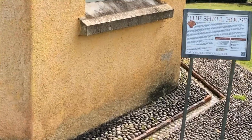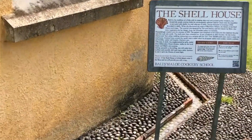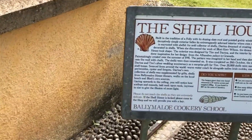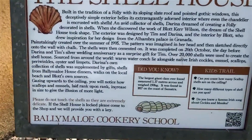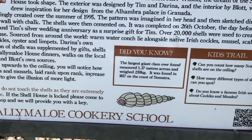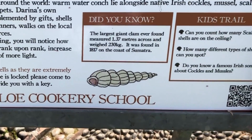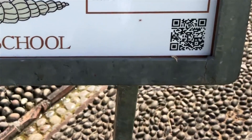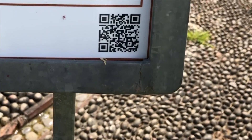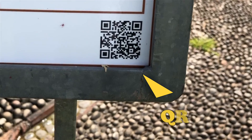Let's say you're in a beautiful location and you want to learn more about something you see. Now, you could read the text, which is kind of boring, or you could look down here and you'll see this little square thing with a lot of dots. You've probably seen them in all sorts of places.